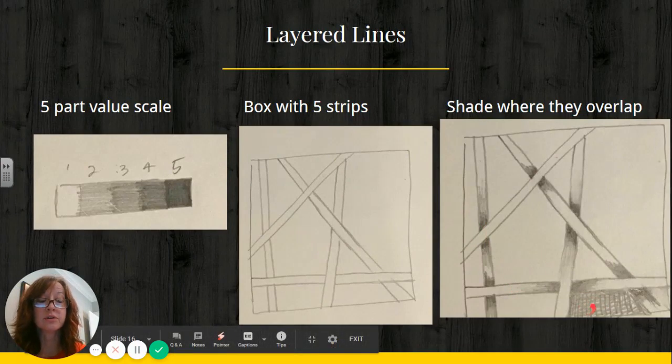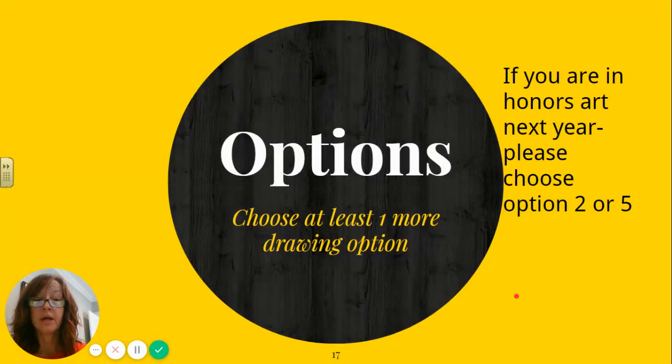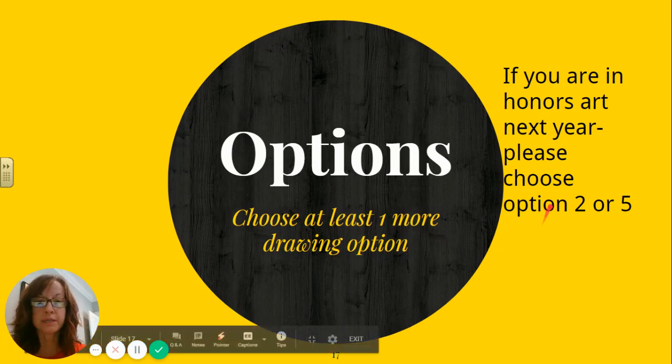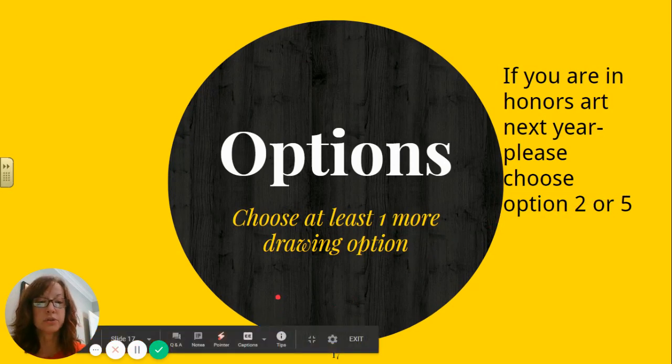If you would like to, you can add some sort of pattern, shading, texture, color in the background if you'd like, but that's up to you. So those are the two things you're going to start with. Then you have options for the last one. And these are all small little sketches you can do on one sheet of paper if you want, or if you mess up and you need more than one sheet, that's fine. You're going to choose one of these. Now, if you are in honors art next year, some of you sixth graders, you already were accepted into honors art, or some of the seventh grade, you are joining us in honors art. If you are in honors art next year, I want you to choose either option two or five, please. Everyone else, you can choose one through five.